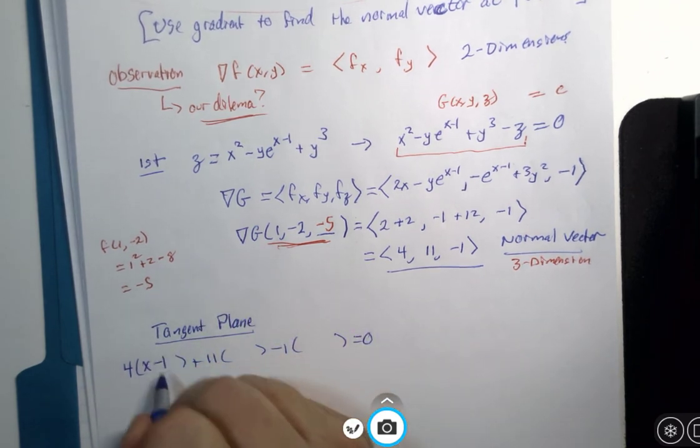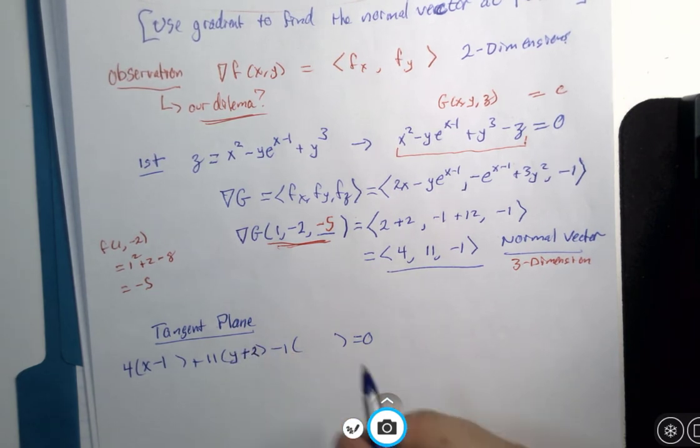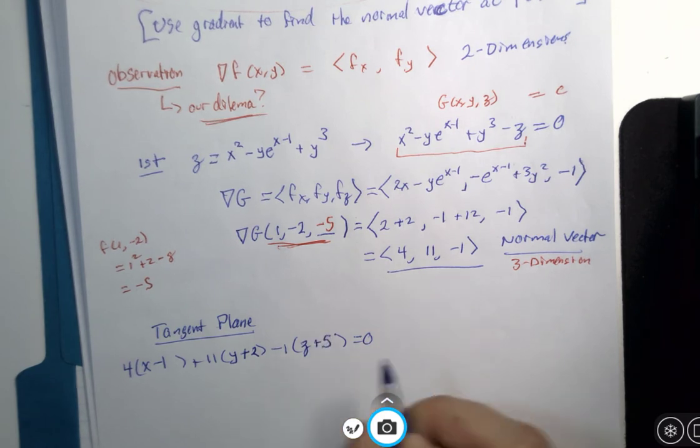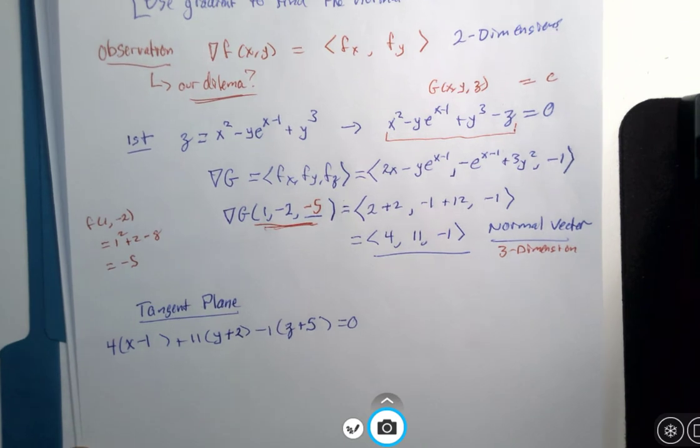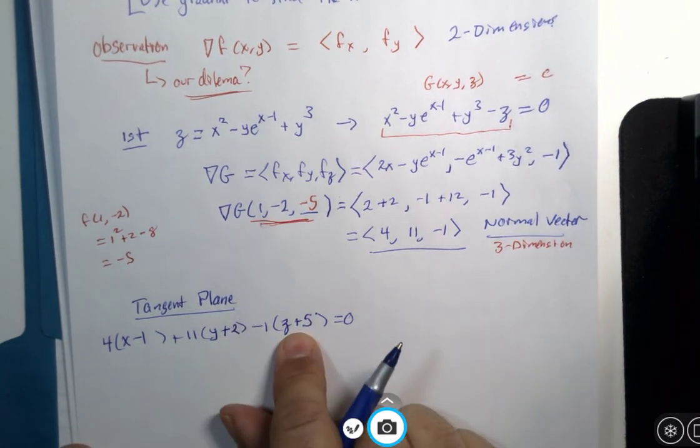And I have my coordinates, x minus 1, y minus a negative 2, this would be y plus 2, z minus a negative, which would be plus 5. There it is, equation of my tangent plane. If you have all the numbers, it's a very fast substitution.